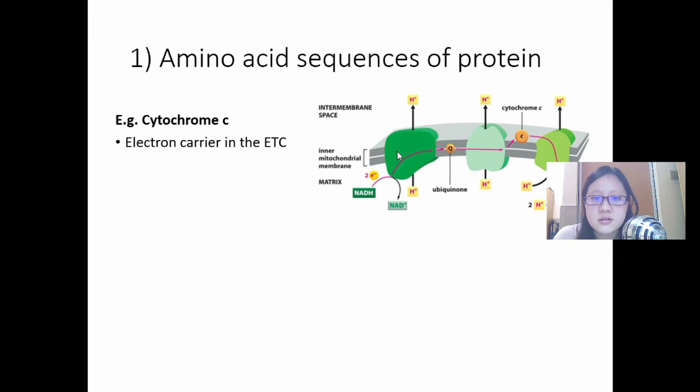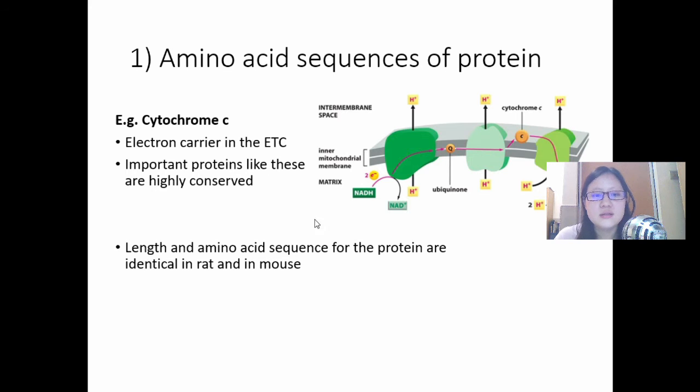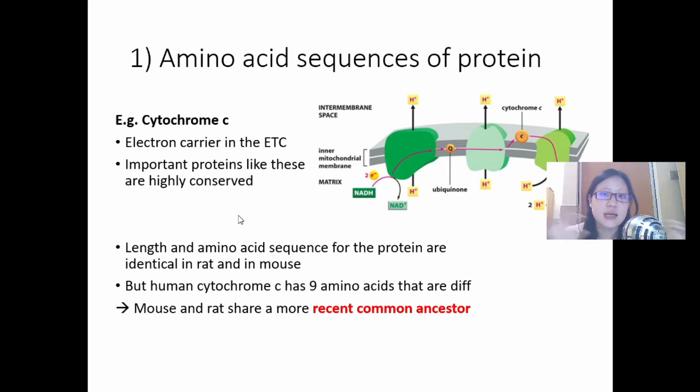Let's do one more example. For example, you take cytochrome C. Cytochrome C is an electron carrier in the electron transport chain. You can see here the mitochondrial membrane. And this is a protein and it's very highly conserved, which means it's very similar across many different species. We can see this protein in rats and in mouse and in humans. We realize that the amino acid sequence for a protein are identical in the rat and the mouse. That's to be expected because they're very similar organisms. But the human cytochrome C has nine amino acids that are different from them. It's highly conserved, it usually stays the same because it's a very important protein. But human has nine amino acids that are different. So, we can say, mouse and rat share a more recent common ancestor. They are more closely related. Whereas humans are more distantly related.